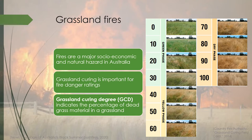Victoria was one of the worst hit states where fire burned 1.58 million hectares of land, of which one-fifth of the total burned area consisted of grasslands. Grassland curing is one of the most important indicators for determining the susceptibility of grass to ignite or propagate a fire, since the amount of dry grass can have a dramatic effect on fire danger ratings.